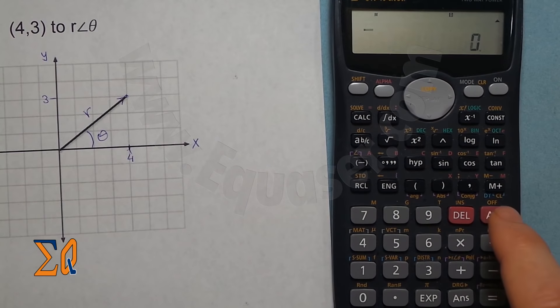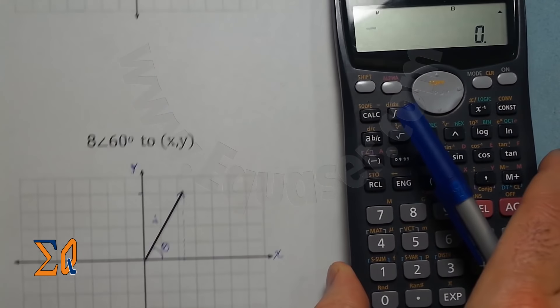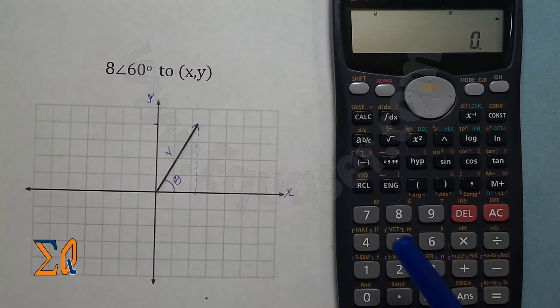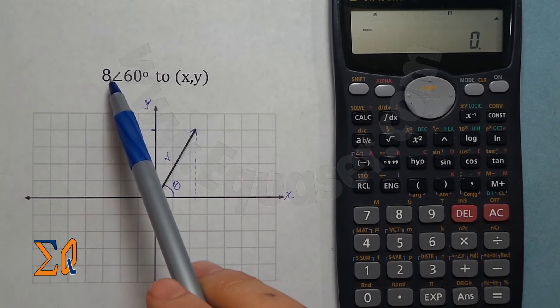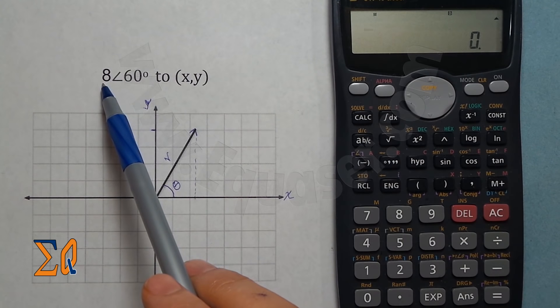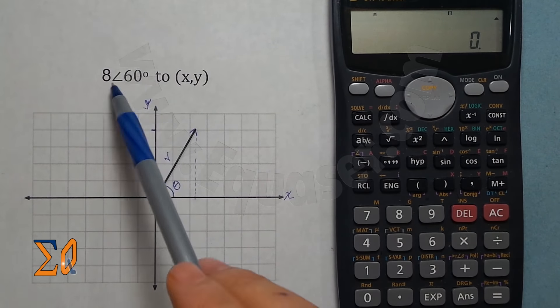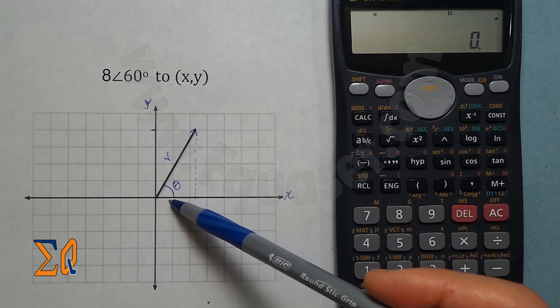Now let's do the opposite. Here you are given a polar coordinate: 8 and 60 degrees. R is 8 and the angle theta is 60 degrees.